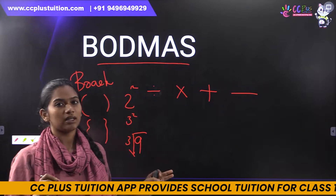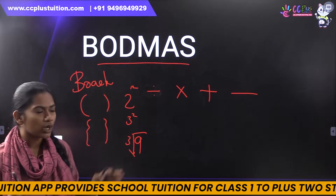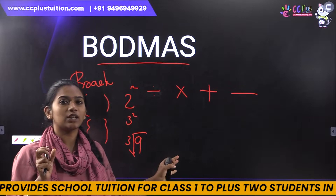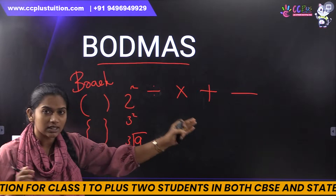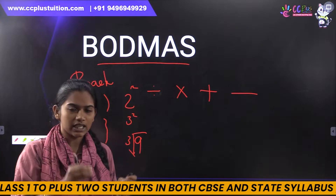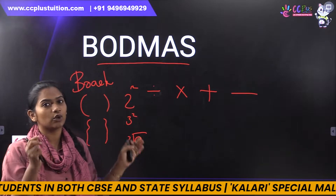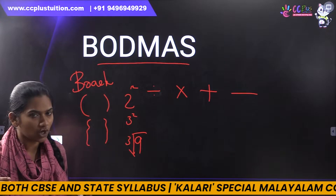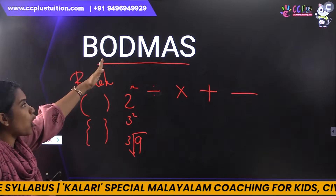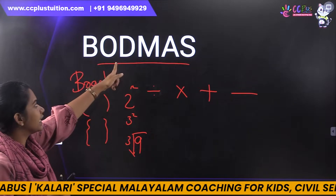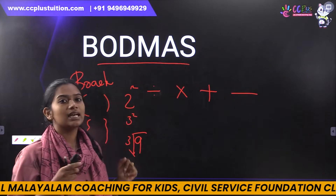In order to understand this order, we will use a simple equation. BODMAS: B — Brackets, O — Order, D — Division, M — Multiplication, A — Addition, and S — Subtraction.